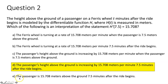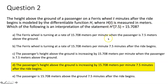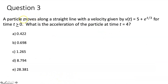Choice E says the passenger is 15.708 meters above the ground 7.5 minutes after the ride begins. This choice is using the original function h of t — it's plugging in 7.5 for t and giving you the height above the ground. But we wanted h prime of t, not h of t.